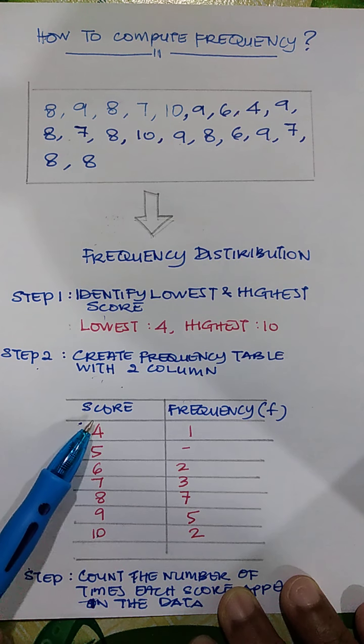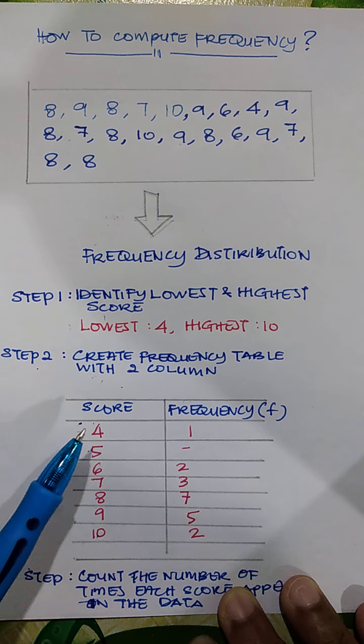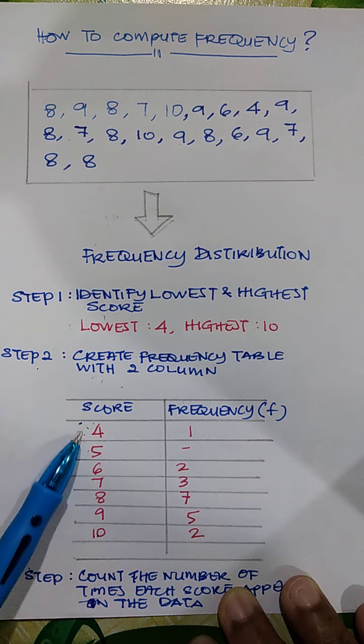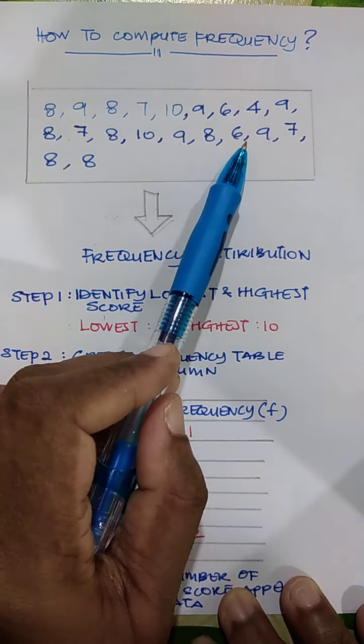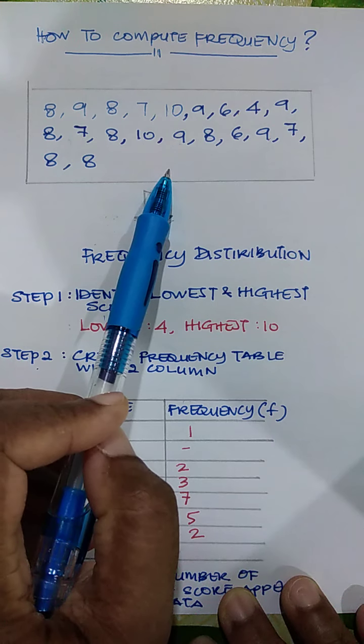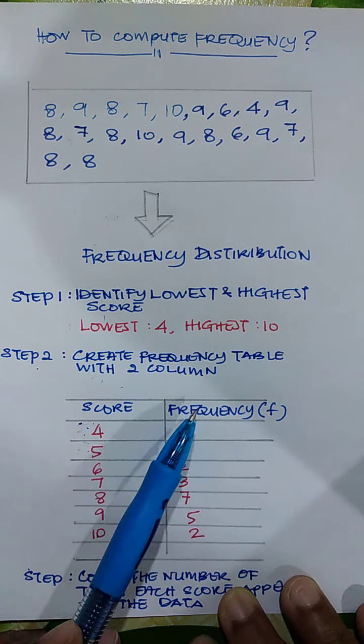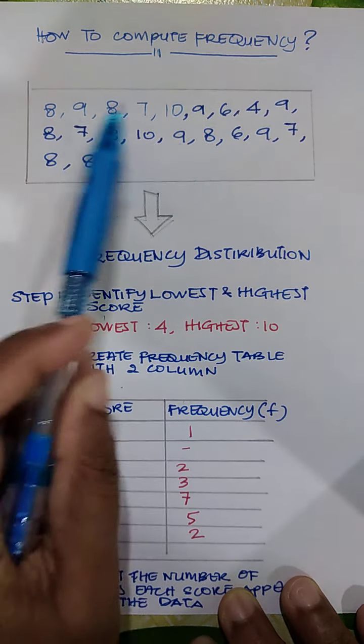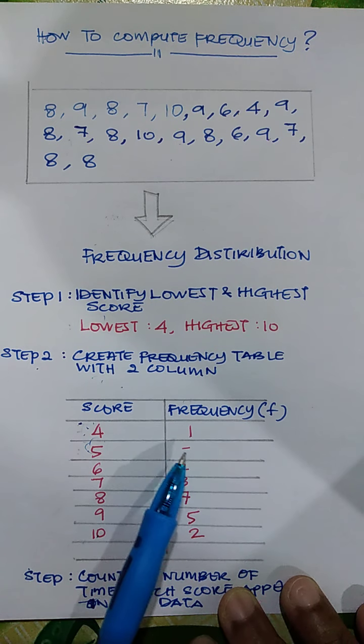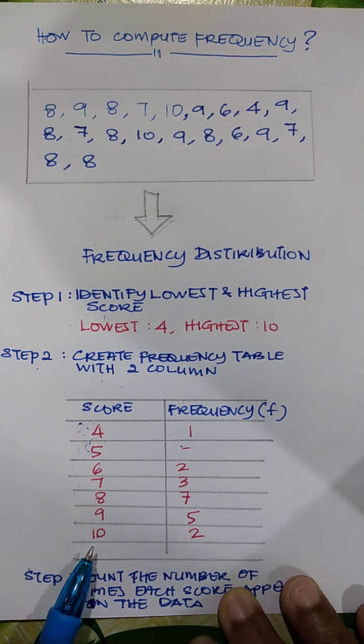highest score, we list them out from 4, 5, 6 until 10. Then we count how many times that number 4 or the score 4 appears in your data. So we calculate from there the number of times from the information that we have. So we have 4 only once, so we write here 1. How many times 5 appears in your data? There is none, so what do you do? We put a dash or we can put a